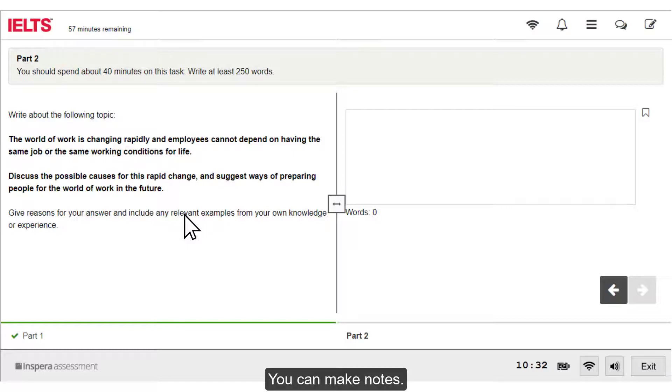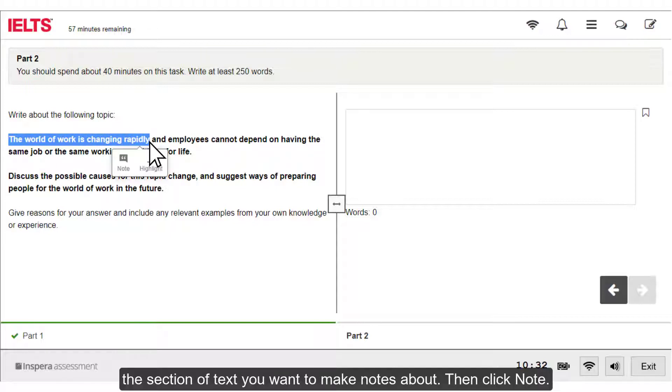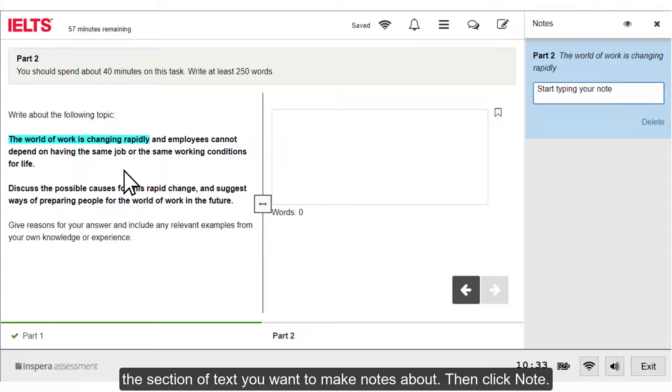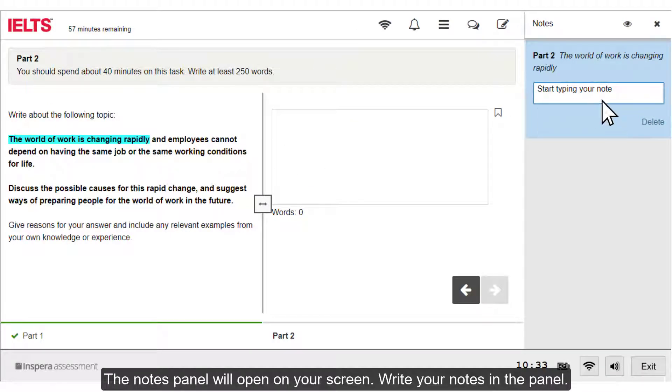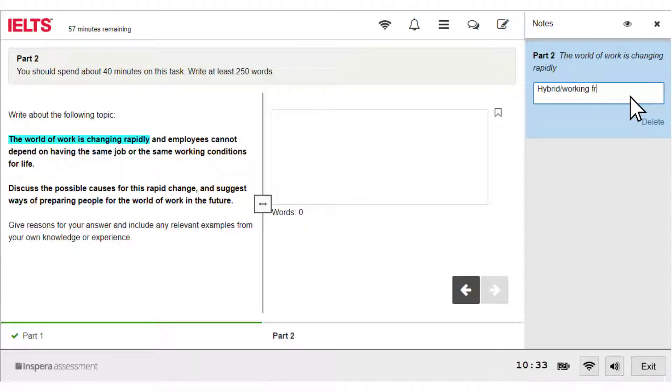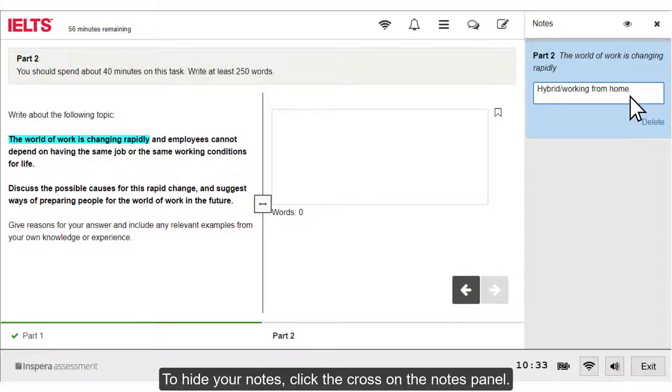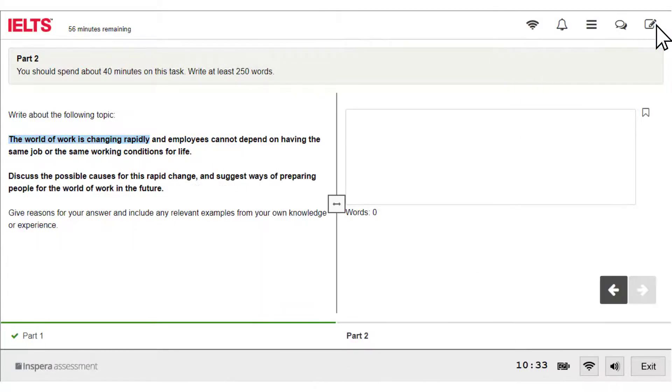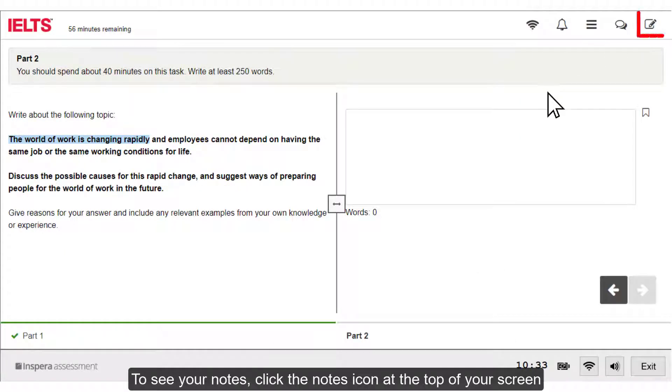You can make notes. To make notes, left click and drag the cursor over the section of text you want to make notes about, then click note. The notes panel will open on your screen. Write your notes in the panel. Your notes will be saved automatically. To hide your notes, click the cross on the notes panel. To see your notes, click the notes icon at the top of your screen or click on the section of text you made notes about.